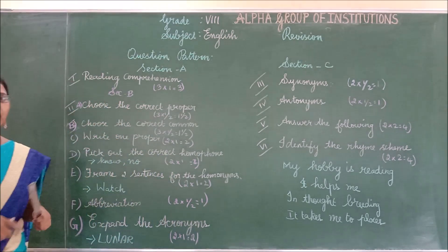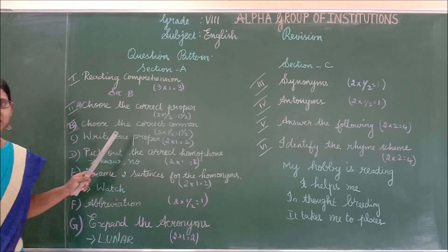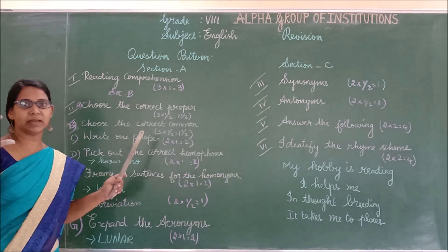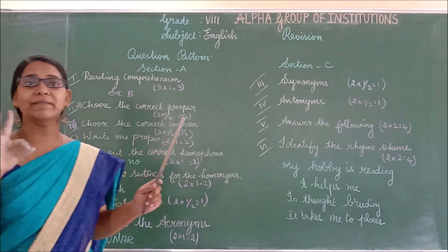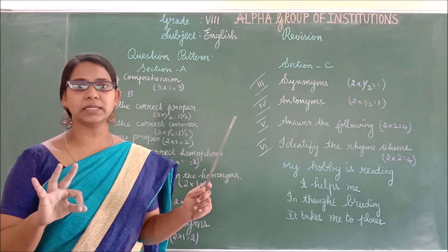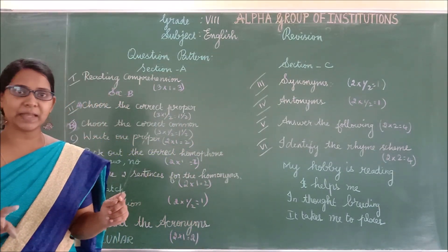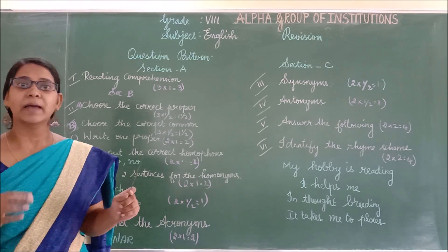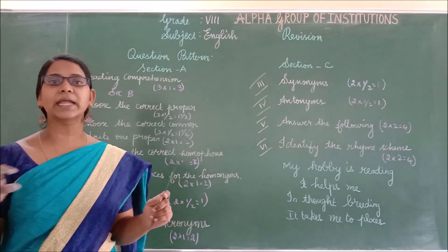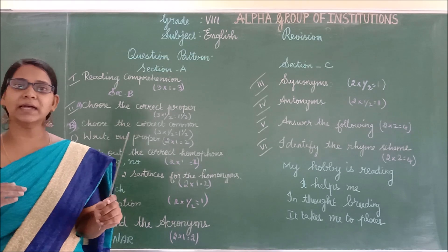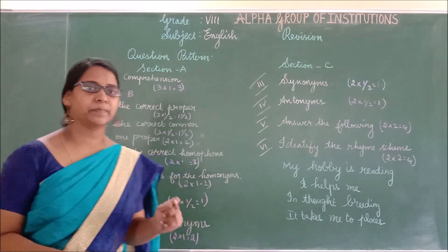Section A, number 1, is reading comprehension. A passage will be given in the question paper. You will have 3 questions. You have to read the passage, understand it, and answer the questions based on the given passage.